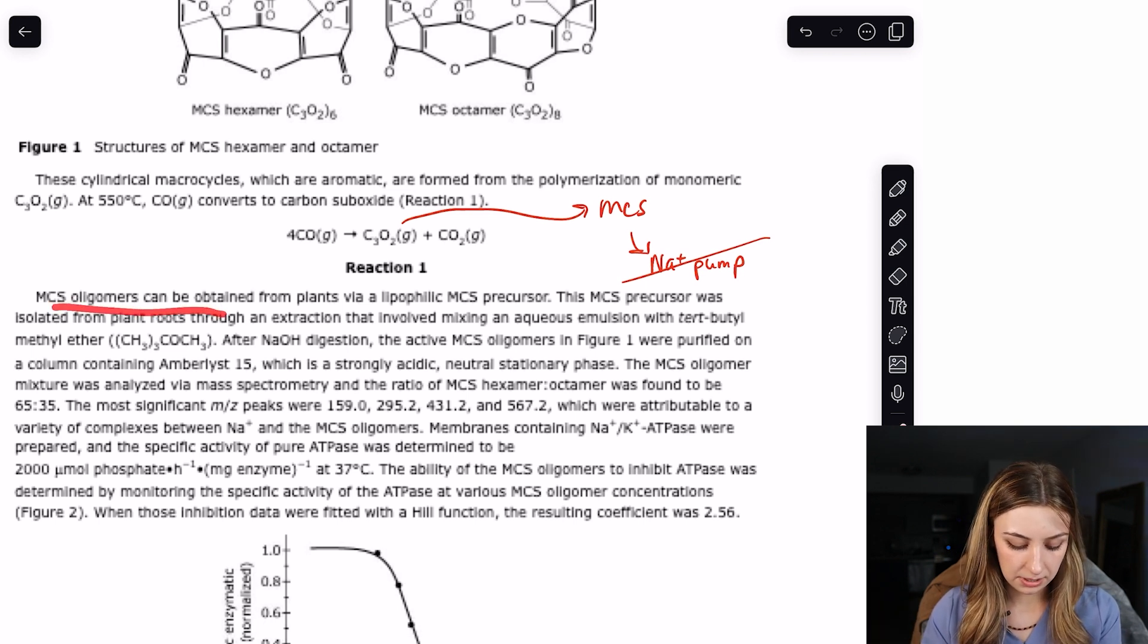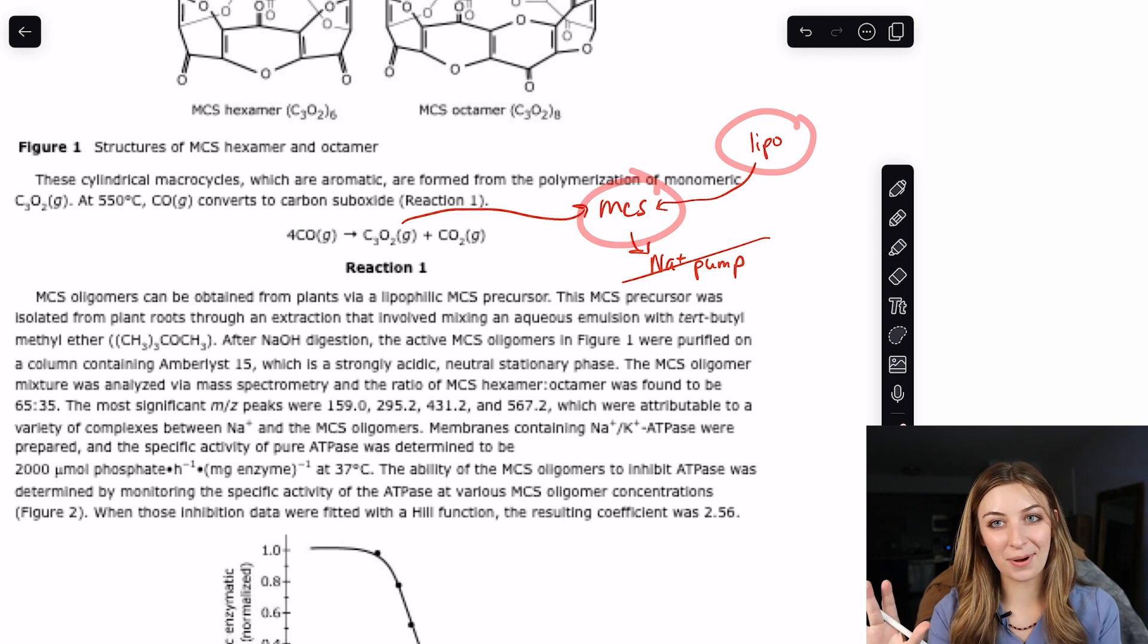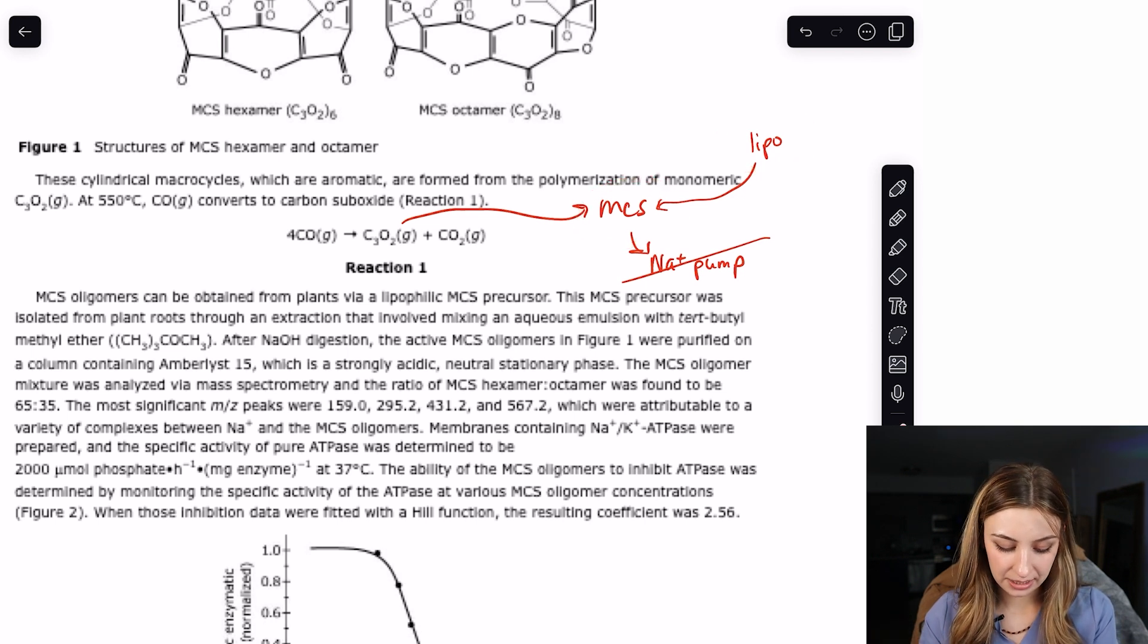MCS oligomers can be obtained from plants via lipophilic MCS precursor. Lipophilic, okay. I think solubility is super high yield on the MCAT. This MCS precursor was isolated from plant roots through an extraction that involved mixing aqueous emulsion with tert-butyl methyl ether. So I'm going to flow chart a little bit because I want to remember this lipophilic fact.